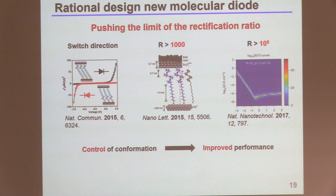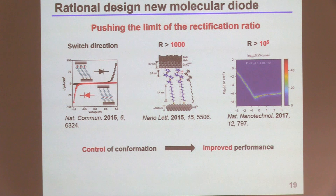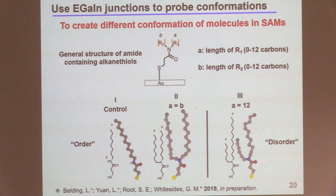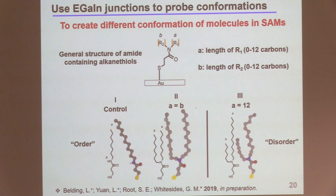We tried to control the conformation of our molecular diode to improve performance from EGaIn junctions, and we realized that EGaIn junctions are very sensitive to structural changes in the SAMs. So how about using EGaIn junctions to characterize different conformations of our molecules? We started designing new molecules — this is unpublished work we are trying to finish soon. We designed a molecule with an imide group that creates two chains — it becomes a branched molecule. We have two chains, R1 and R2. A is the length of R1, designed from 0 (only hydrogen, no carbon) to 12 carbons. B is the length of R2 from 0 to 12 carbons.